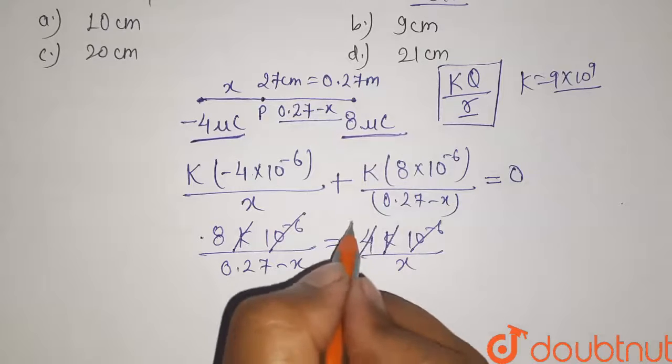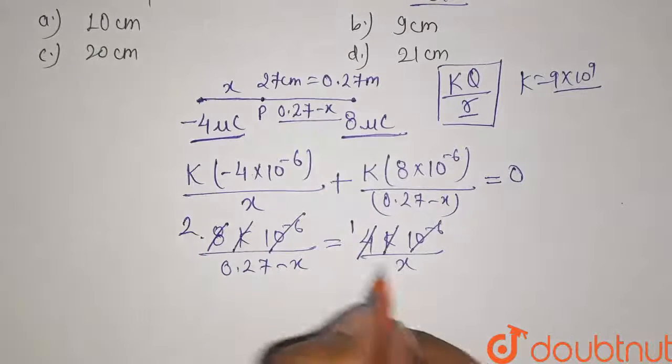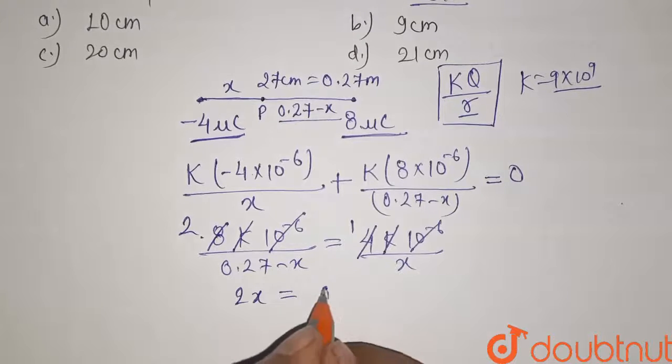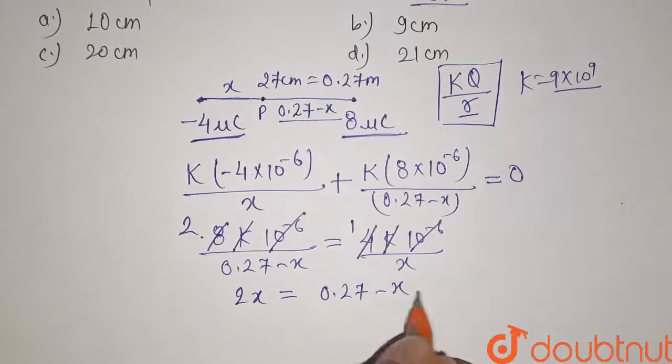And here it is 1 and here it will become 2. Now solve this. So we have 2x is equals to 0.27 minus x. Now from this we have 3x is equals to 0.27 meter.